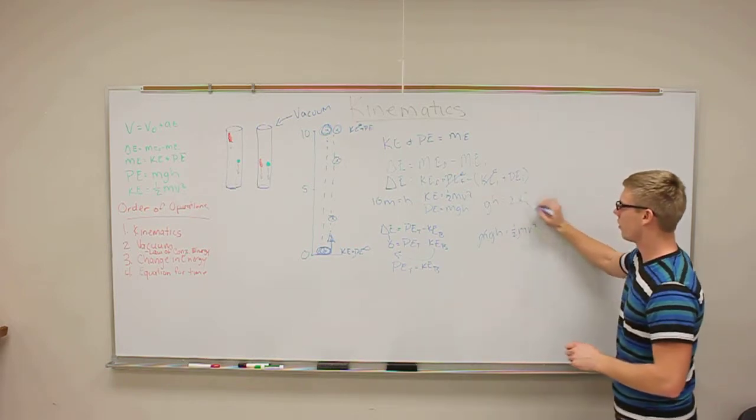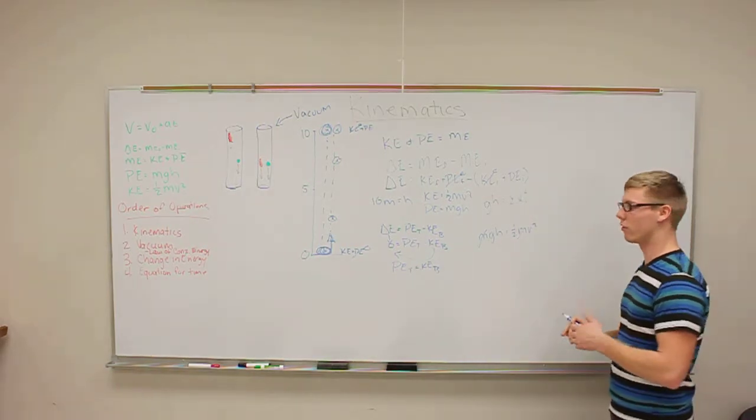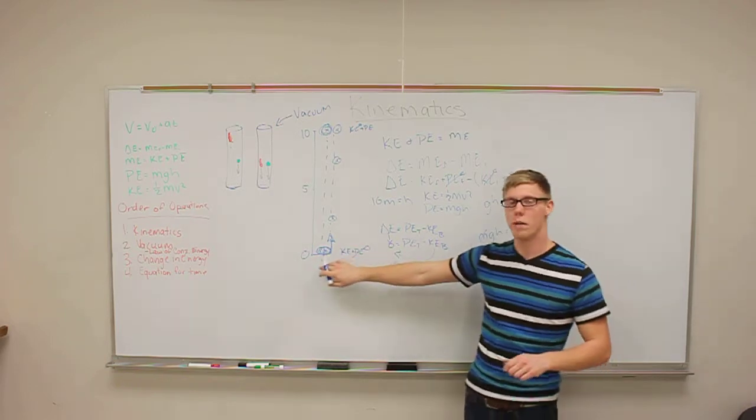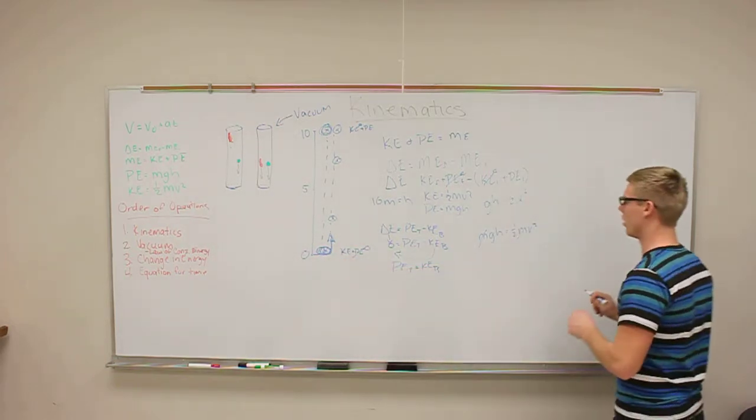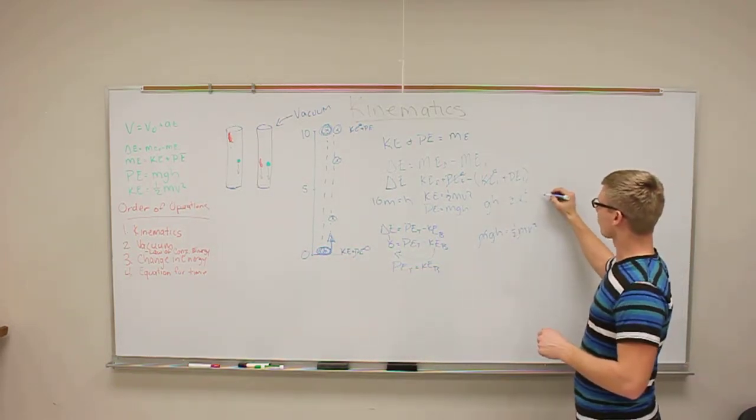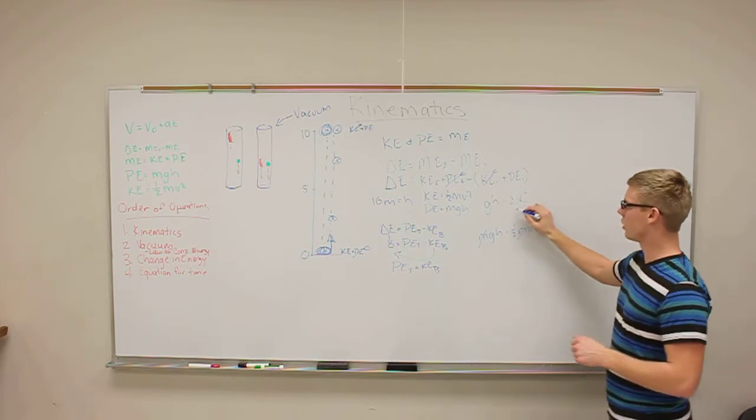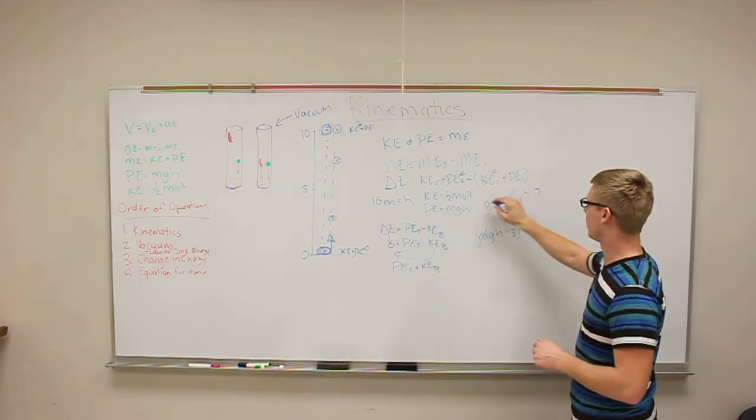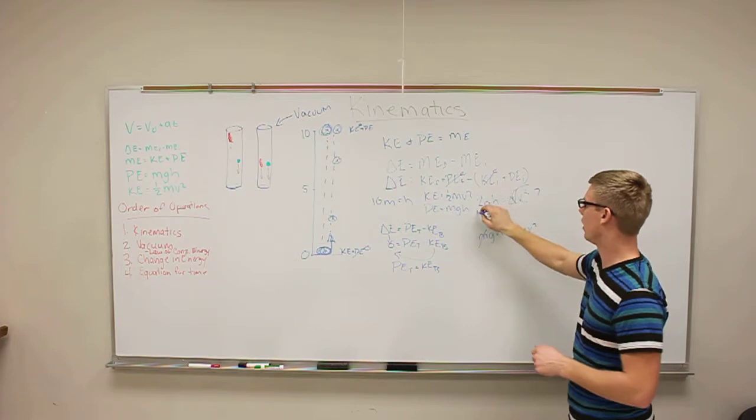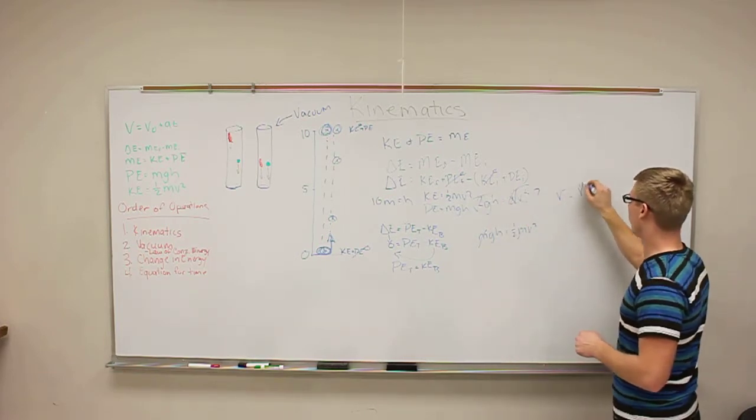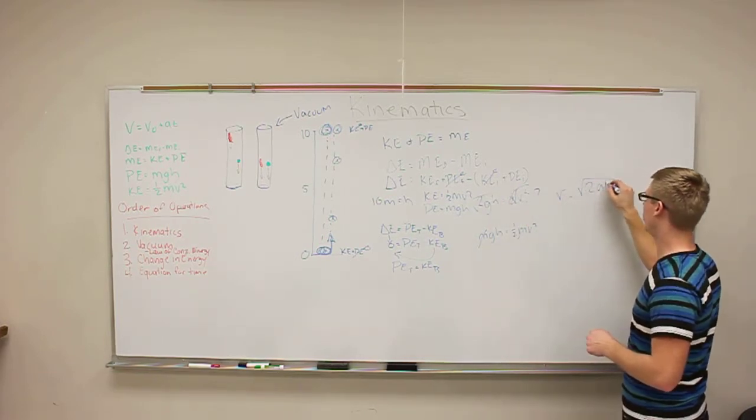So, right now we're solving for velocity. We want to know the final velocity of the ball right before it hits, the second before it hits. So, we can rearrange this equation, times this by two to get it to both sides, and then square root of the v to get v equals square root of 2gh.